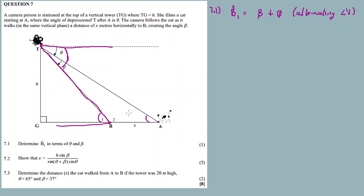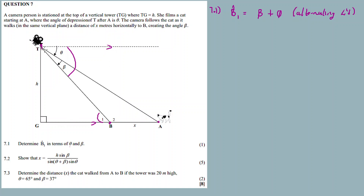The angle A is equal to alpha — still alternating angles. Usually they don't tell you this, but this dotted line is parallel to this horizontal line, and it must always be parallel to this one. So B1 is equal to beta plus theta because of alternating angles — because my lines are parallel, this and this are alternating angles.